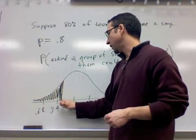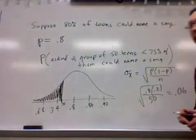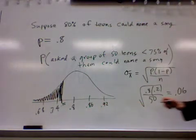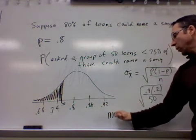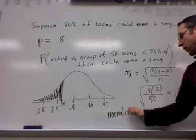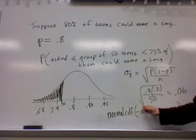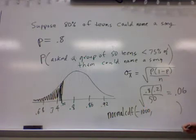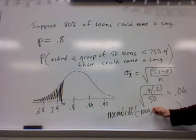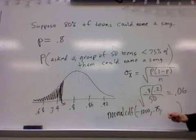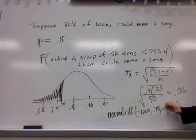Suppose right there is 0.75. That can be easily accomplished using normalCDF. So normalCDF, it's waiting for four numbers. Go from negative 1000% to 0.75. We know 0.8 is the center, 0.06 is the standard deviation.